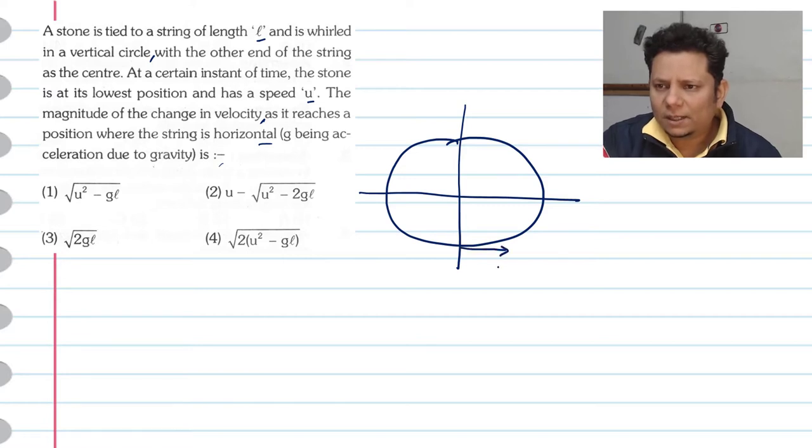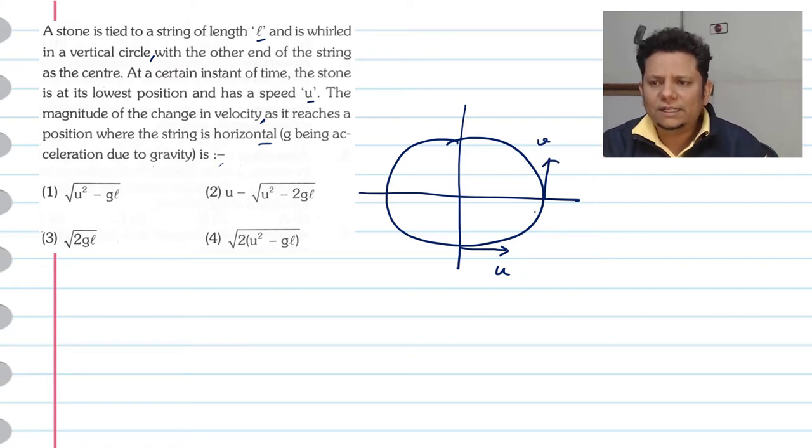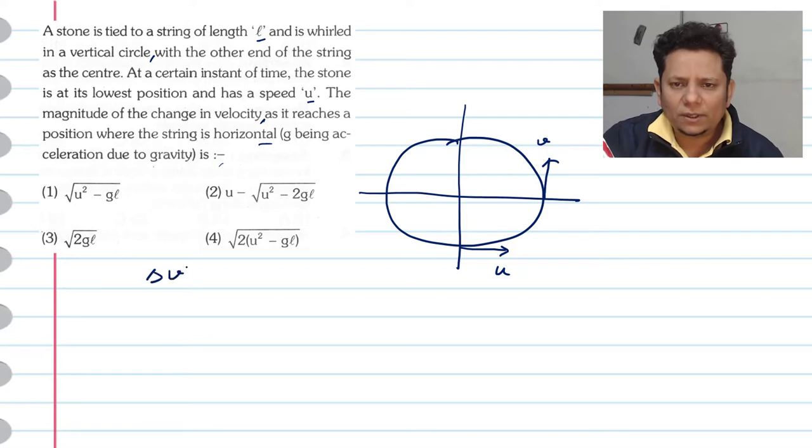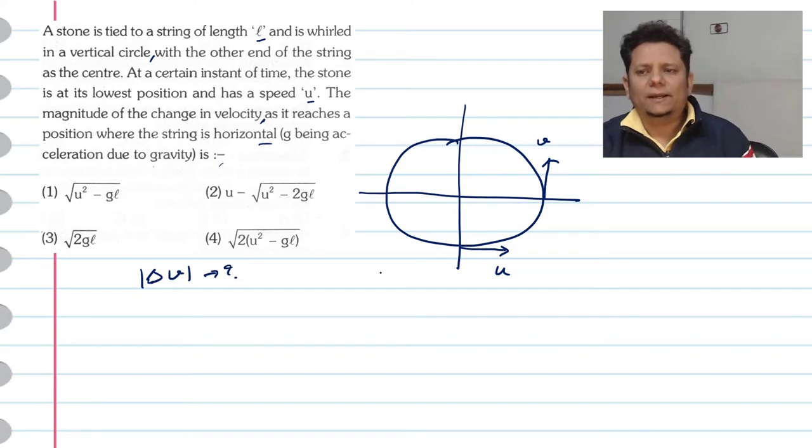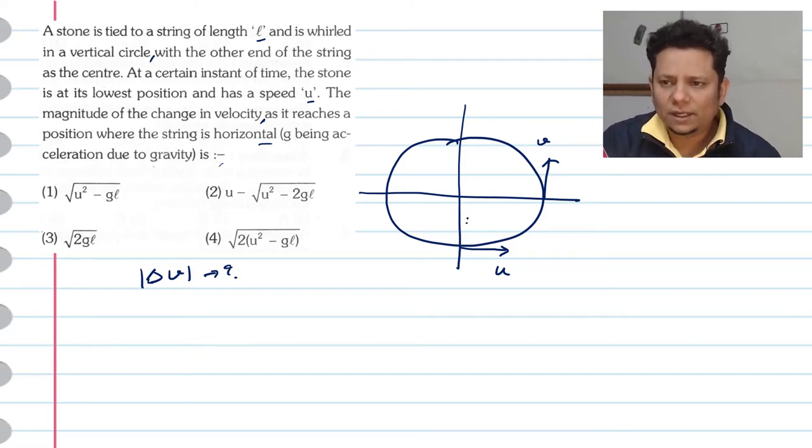The scenario is that you have a particle in vertical circular motion. Here is the speed U. When the particle is here, the velocity is V. We need to find the magnitude of delta V, the change in velocity. If you have a speed U and the string length is L, then when you reach here...